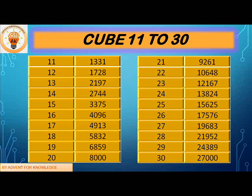Let's repeat the sequence again from 21 to 30. 21 cube is 9261, 22 cube is 10648, 23 cube is 12167, 24 cube is 13824, 25 cube is 15625, 26 cube is 17576, 27 cube is 19683, 28 cube is 21952, 29 cube is 24389, and 30 cube is 27000.